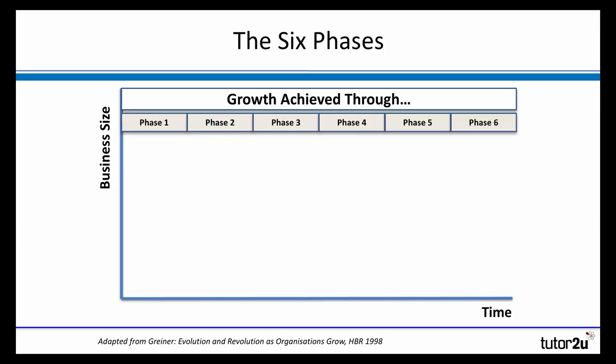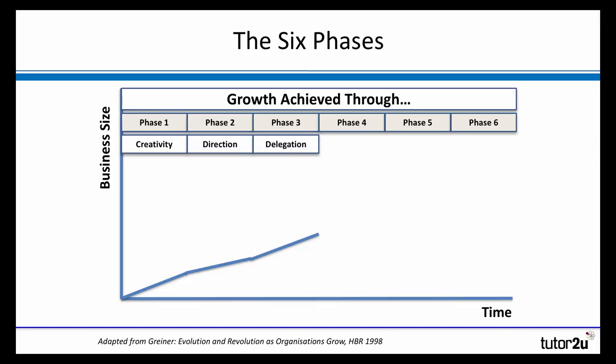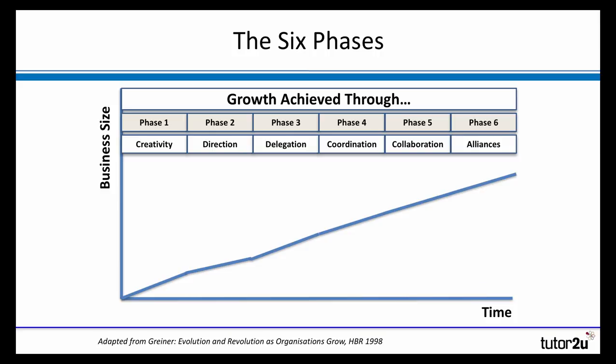So let's firstly go through the phases of growth that Greiner identified and the crises that arise, and then explain them one at a time. Greiner suggested that a business typically goes through six phases of growth, starting at creativity, through direction, leading to delegation, coordination, collaboration, and lastly alliances.